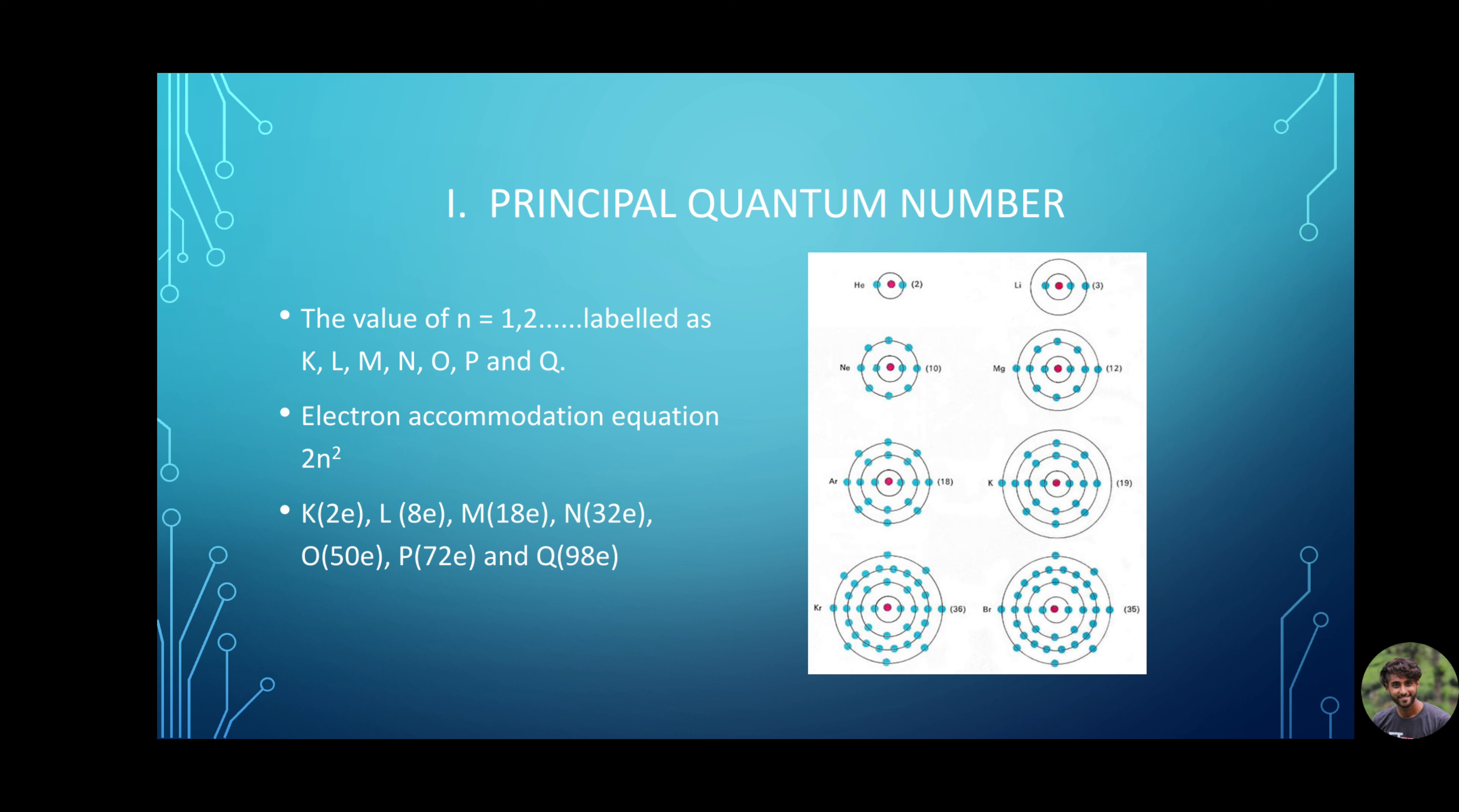The shells are labeled as K, L, M, N, O, P, and Q, with electron accommodation described with the equation 2n². K can accommodate 2 electrons, L can accommodate 8 electrons followed by 18, 32, and so on.